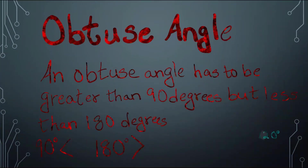Obtuse Angle. An obtuse angle has to be greater than 90 degrees but lesser than 180 degrees.